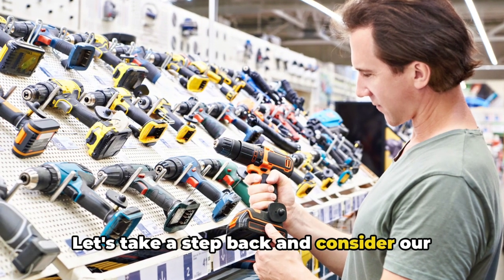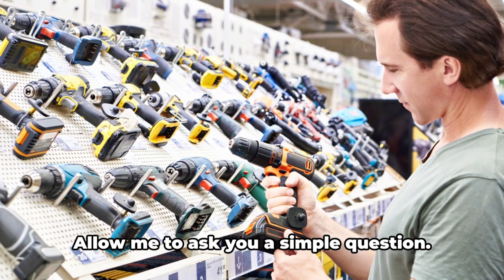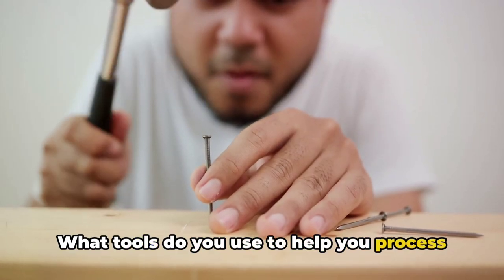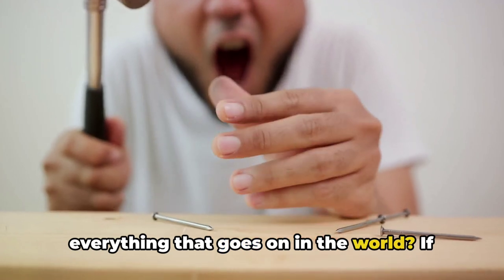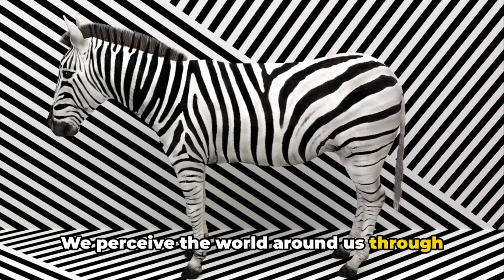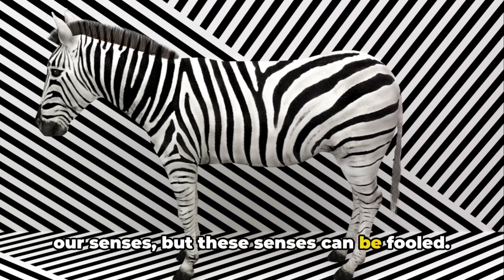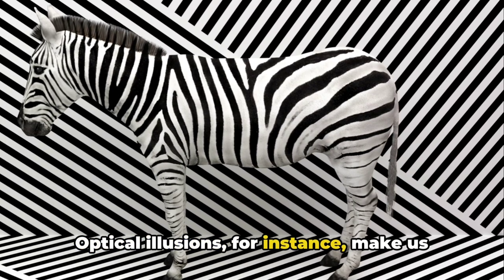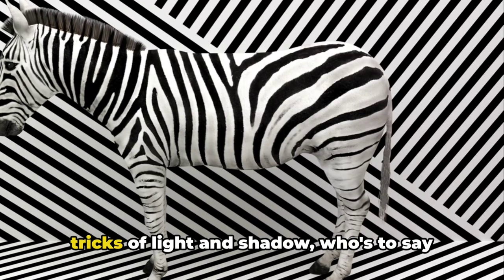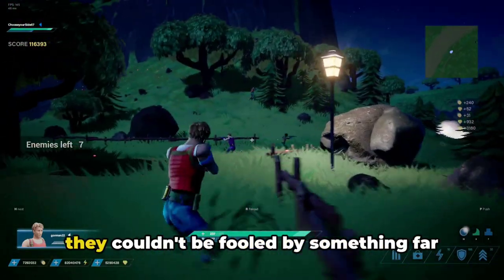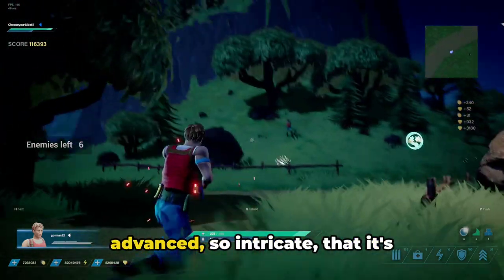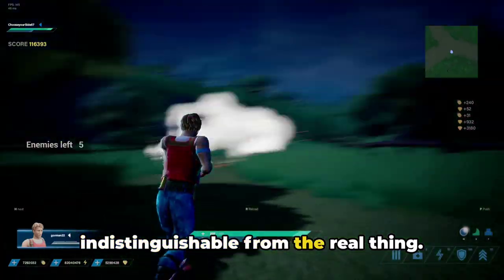Let's take a step back and consider our own understanding of reality. Allow me to ask you a simple question. What tools do you use to help you process everything that goes on in the world? We perceive the world around us through our senses, but these senses can be fooled. Optical illusions, for instance, make us see things that aren't really there. So if our senses can be fooled by simple tricks of light and shadow, who's to say they couldn't be fooled by something far more sophisticated? A simulation so advanced, so intricate, that it's indistinguishable from the real thing?